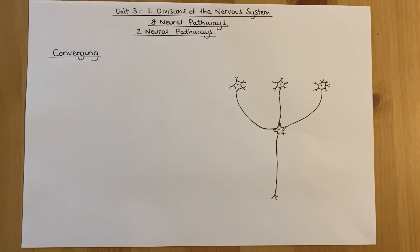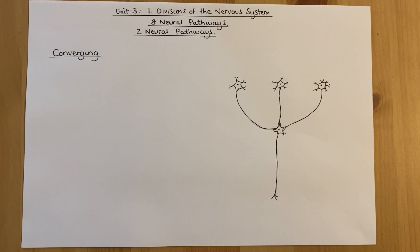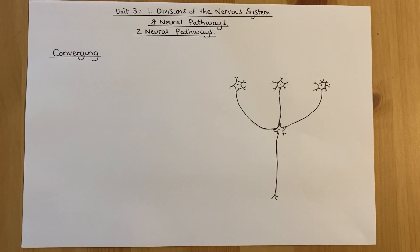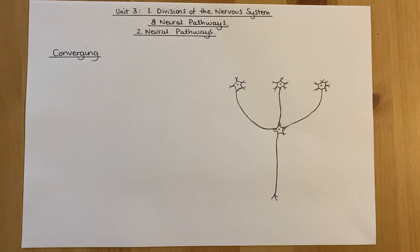This video will cover the final part — the second part of the Division of Nervous System and Neural Pathways, part of Unit 3 of the Higher Human Course. It'll cover neural pathways. This will be a shorter video than the previous one because there are only really three main things to cover. The reason why we have multiple neural pathways is because your body is a really complex being, and the more different types of neural pathways you have, the more complex it can be, and you can communicate in different ways with different parts of your body.